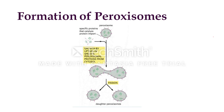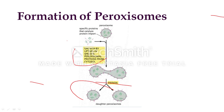This depicts how peroxisomes are formed. The peroxisomes take up specific peroxisomal proteins — such as oxidases, urate oxidase, catalase, or other proteins — and increase in size. After that, they undergo fission, resulting in the formation of daughter peroxisomes.